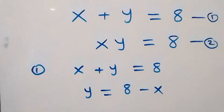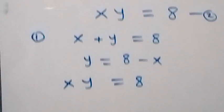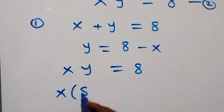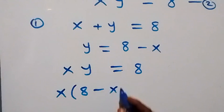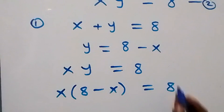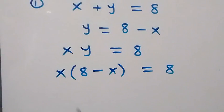From here we can substitute this into equation two. What we have in equation two is x times y equals 8, and substituting y equals 8 minus x, this becomes x times (8 minus x) equals 8.